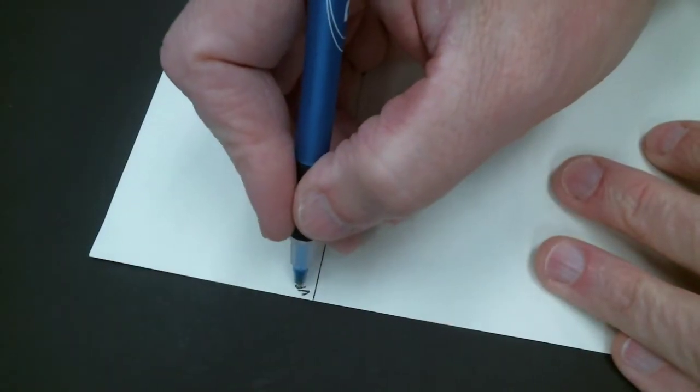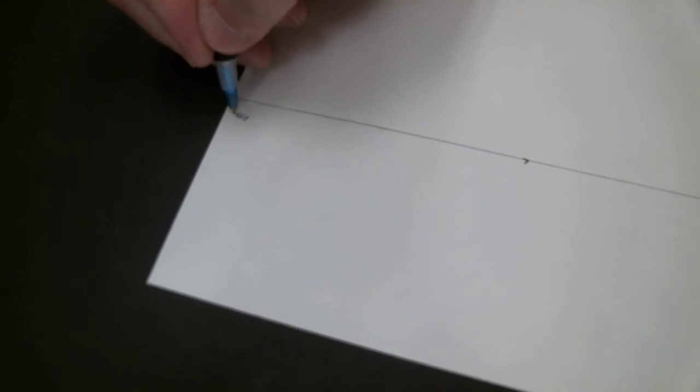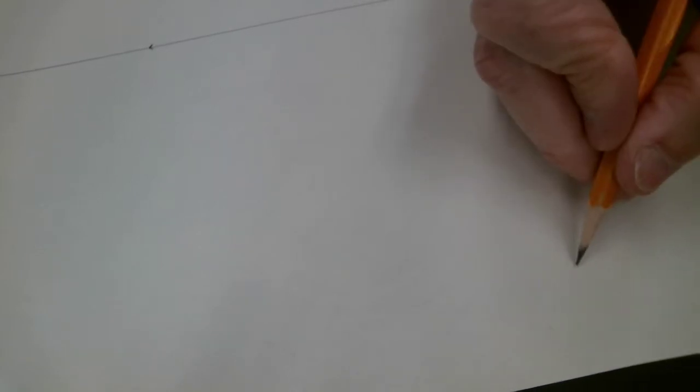There's going to be a vanishing point to the left, a vanishing point to the right, and down below. So you're kind of starting with the front, front right part of this here.